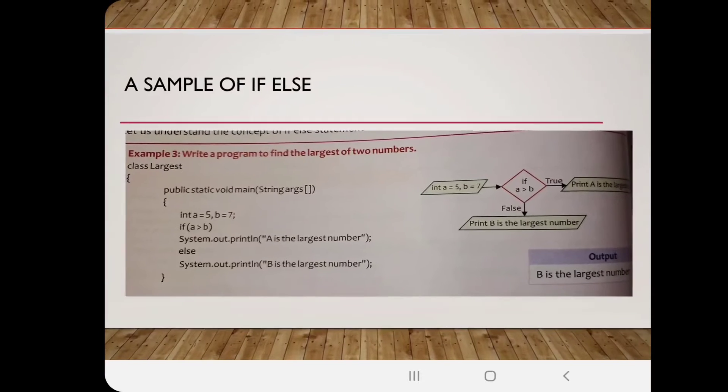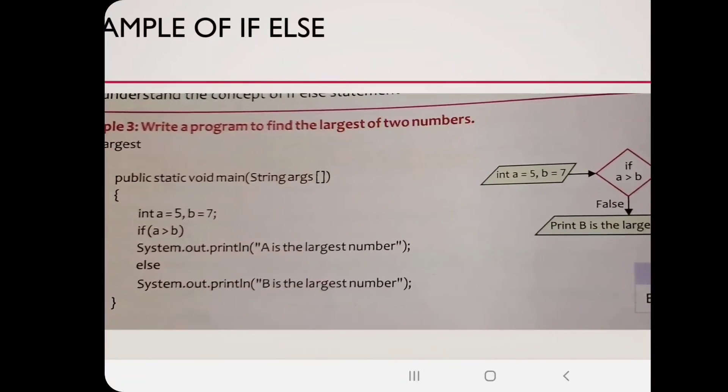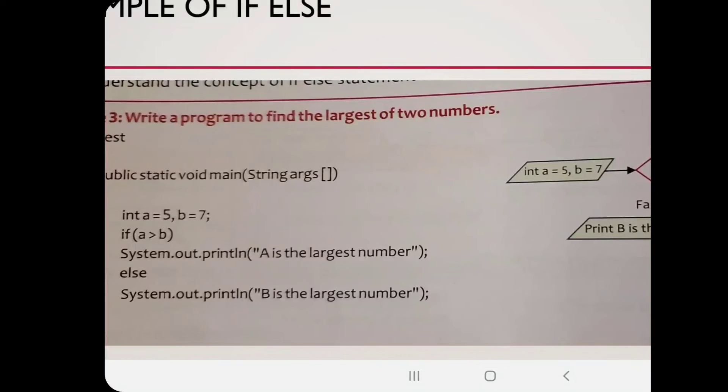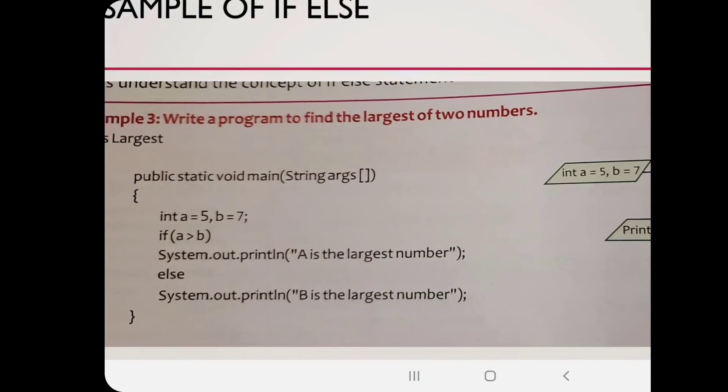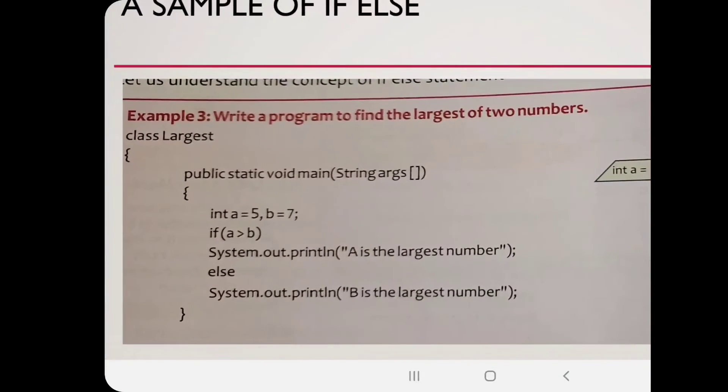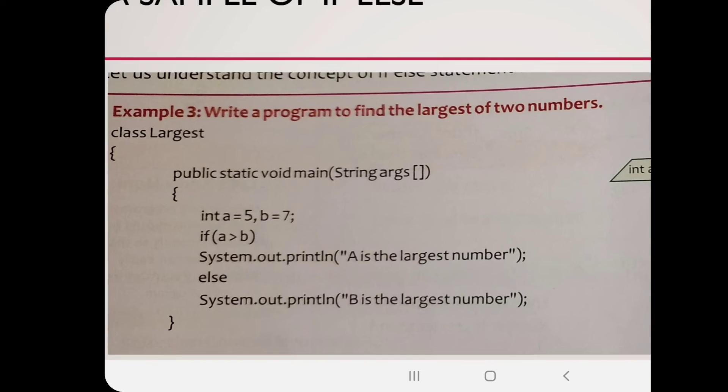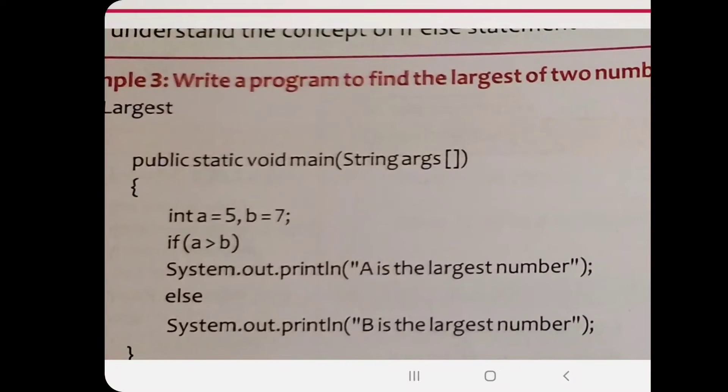Now move to a sample program of if-else: write a program to find the largest of two numbers. You have to find out which number is largest. Program name is public class largest. Like other programs, we have started, and we have taken two numbers like five and seven, but we don't know which number is greater. We have to find out, so we put the if statement: a is greater than b. If this goes correct, which is actually not, then a is the largest number. This message will come; otherwise, b is the largest number. This message will come. You are very sure that the second message will come; the first message is not correct.